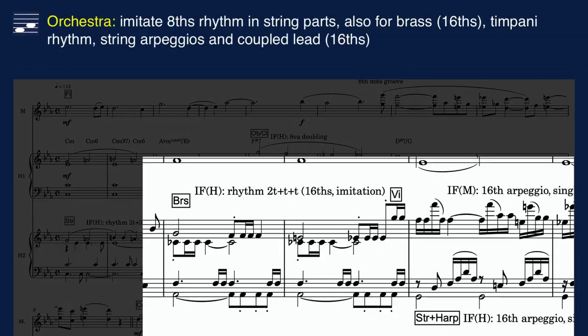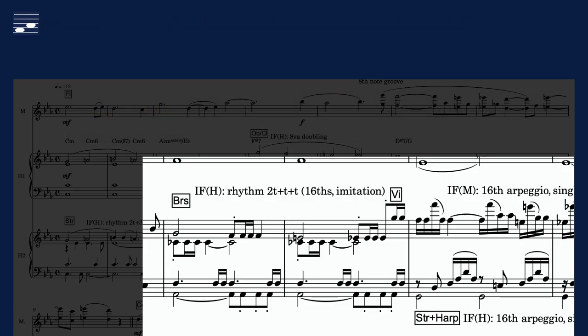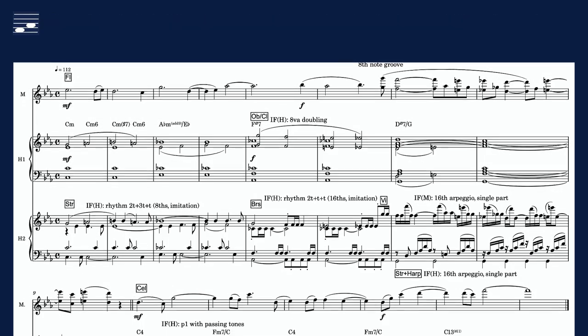In brass, the sixteenth-note rhythm quasi-imitation is copied to a section with two trumpets, horn, trombone and tuba. The timpani part illustrates the changing time unit over the various sub-phrases.